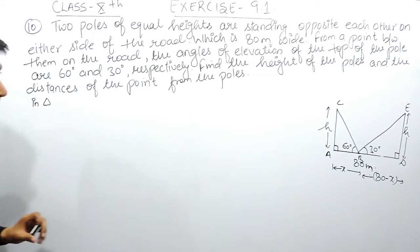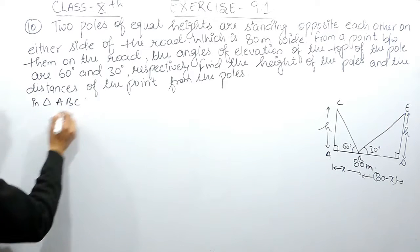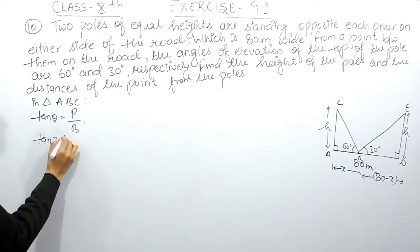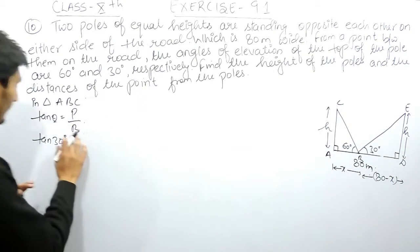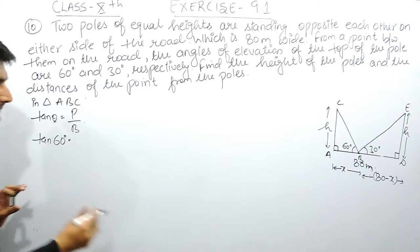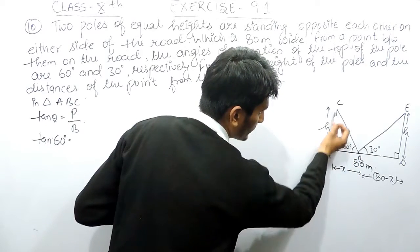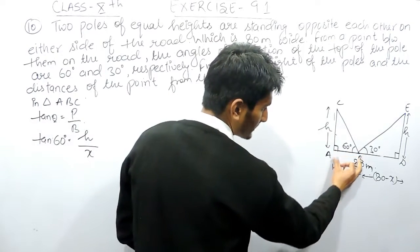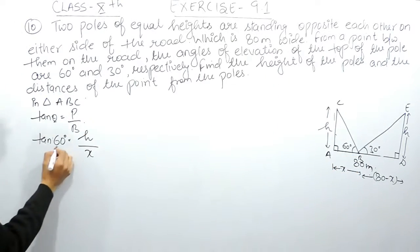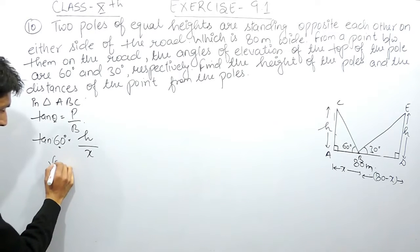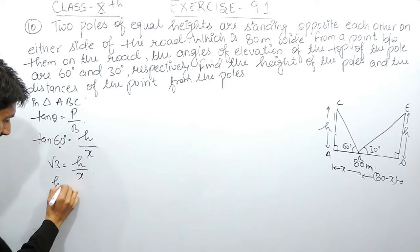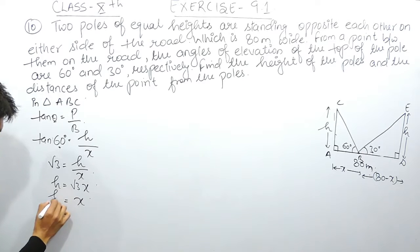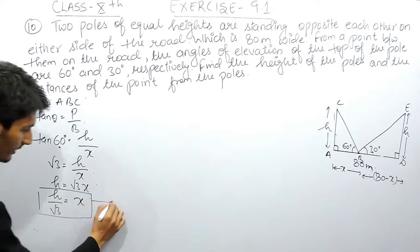In the first triangle ABC, I use tan θ equals perpendicular upon base. Here the angle is 60 degrees. The perpendicular is the height H and the base is X meters. Substituting tan 60° which equals root 3, we get H equals root 3 times X, or X equals H divided by root 3. This is our first equation.